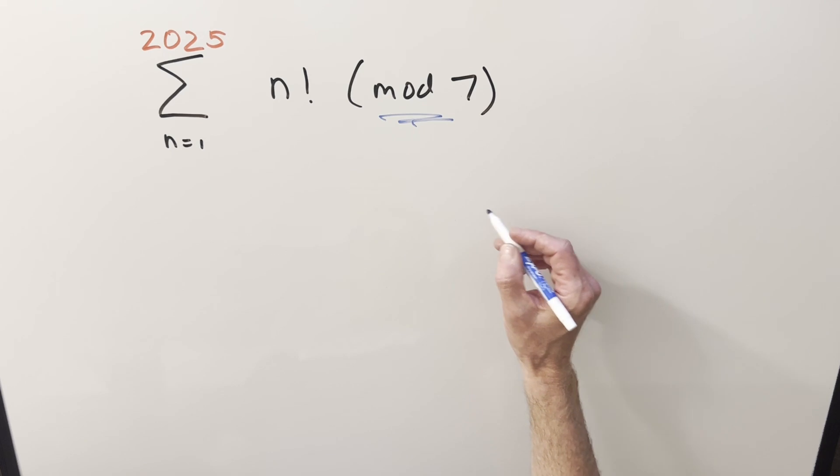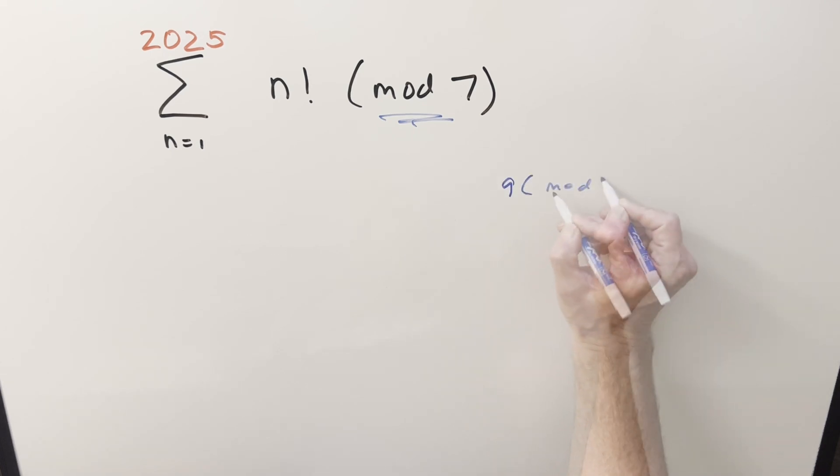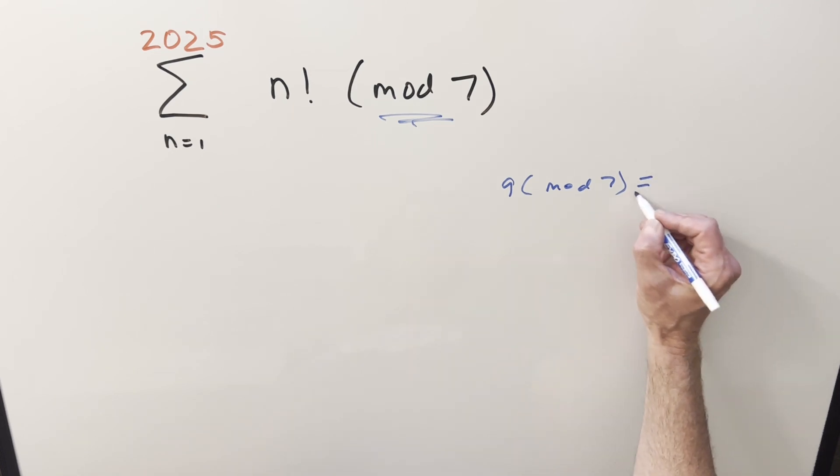So maybe I could show it with some kind of example like if we have 9 mod 7, you divide 7 into 9. It just divides once but you get a remainder of 2 so we say it's congruent. This is going to be congruent to 2.